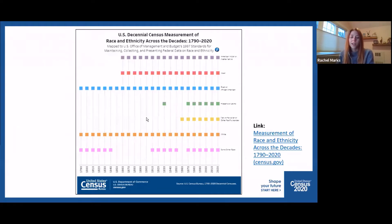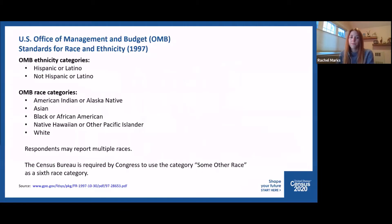This data visualization enables you to see how the race and ethnicity categories on the census have changed throughout the decades, including for the 2020 census. Within the context of the U.S. Decennial Census, the questions and concepts of race and ethnicity follow the standards set forth by OMB.